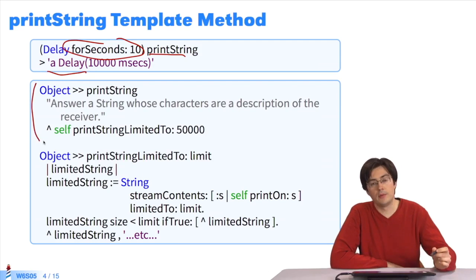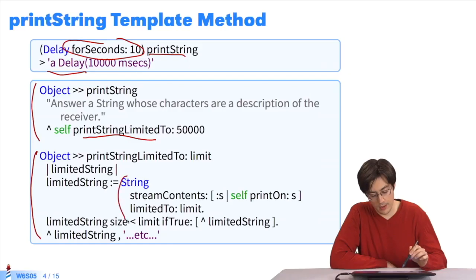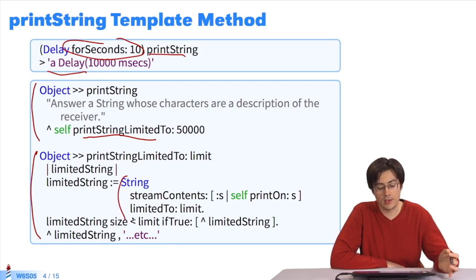The printString method is implemented in the object class like this. It sends the message printStringLimitedTo. This implementation recovers a string of characters that represents the object.